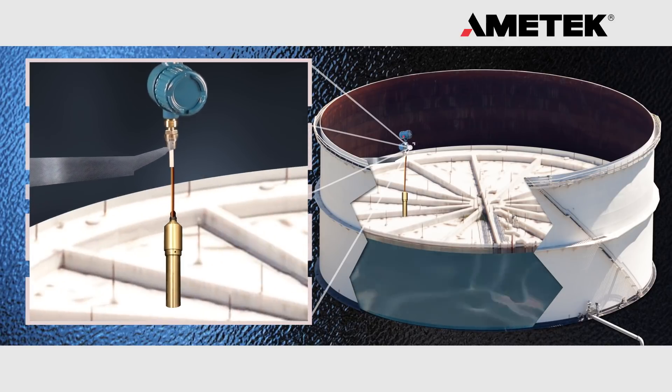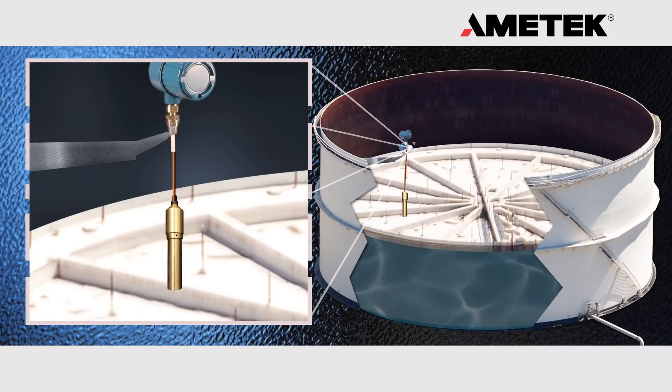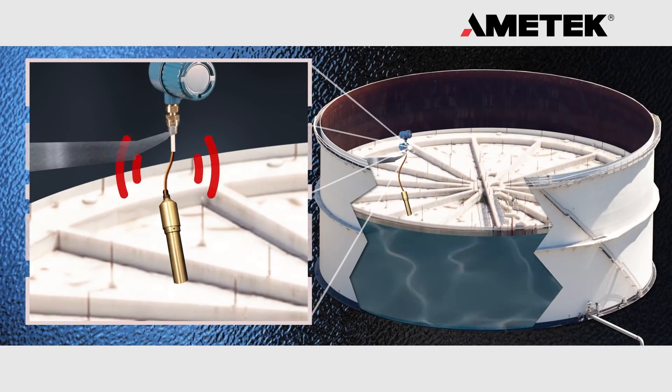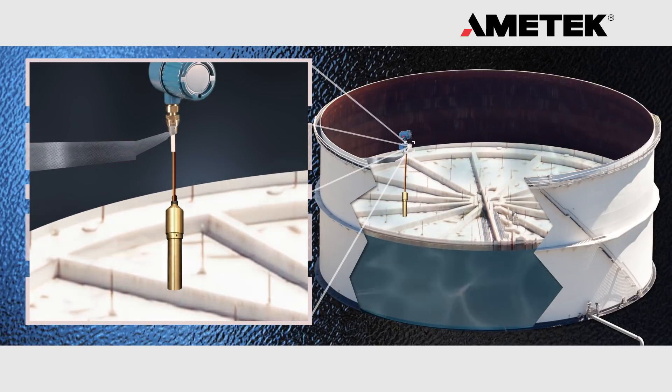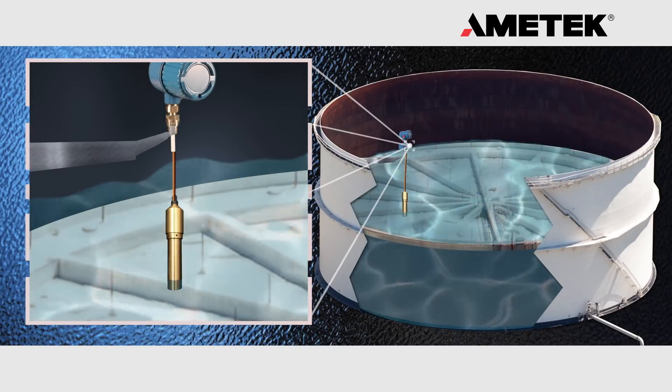The floating roof may be dry, in which case you need to detect the position of the physical metal roof. Or there may be a few inches of rainwater or petroleum liquids on the roof.